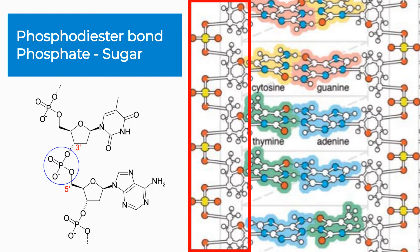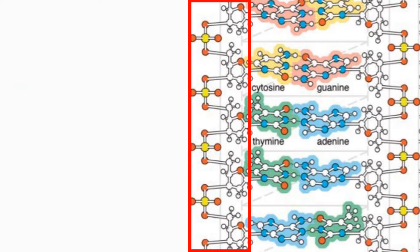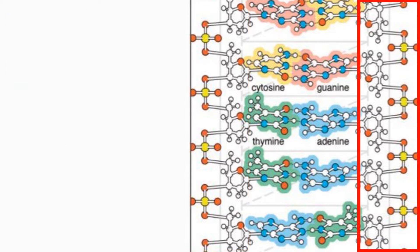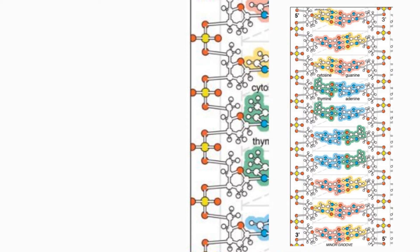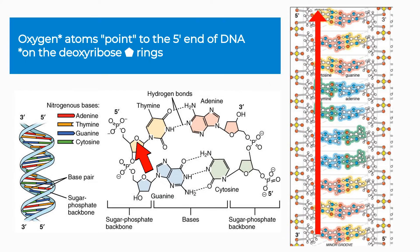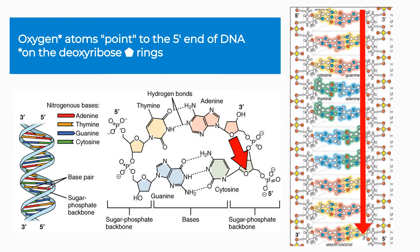It's also very important to notice the direction of the sugar phosphate backbone, which runs in opposite directions on the two sides of the double helix. I look for red oxygens, which point up towards the five prime end of the molecule on the left side of the DNA, and that point downward towards the five prime end of the backbone on the right side of the DNA.